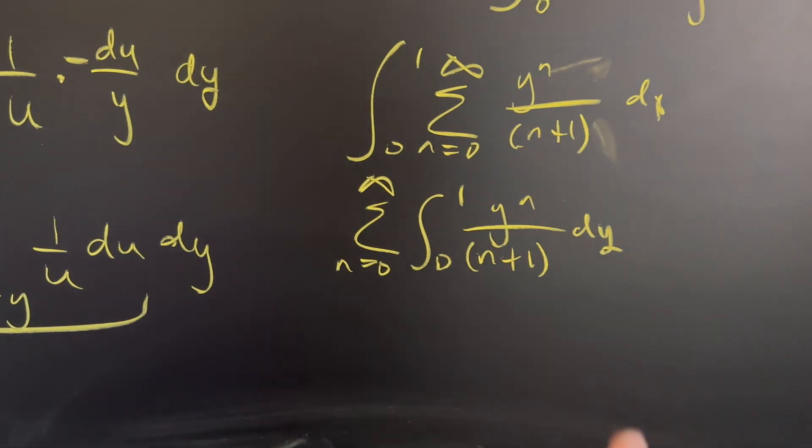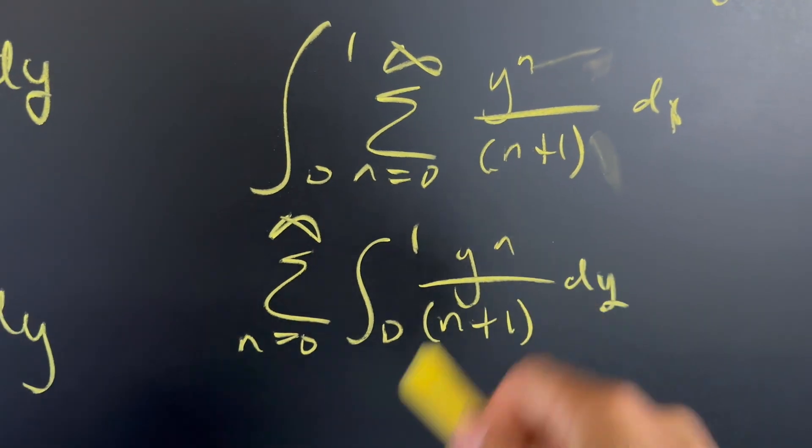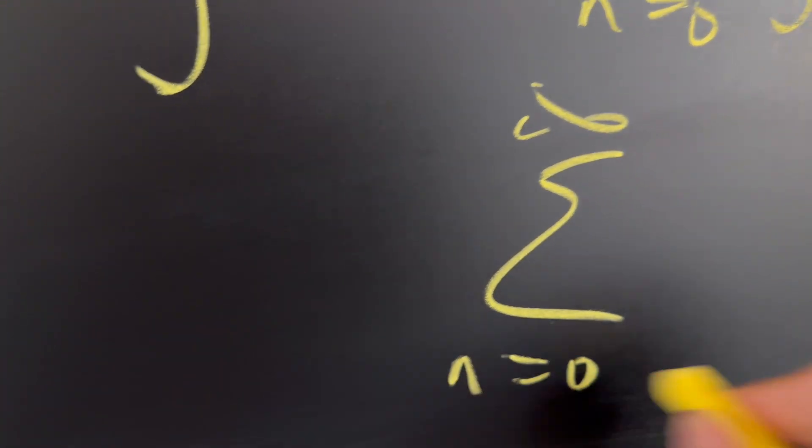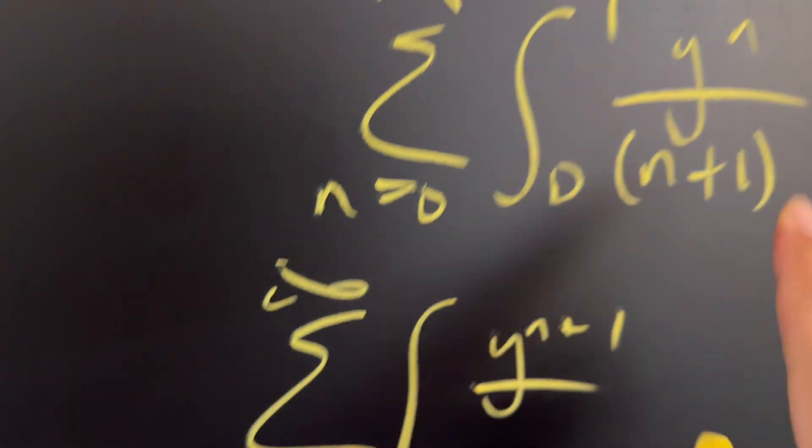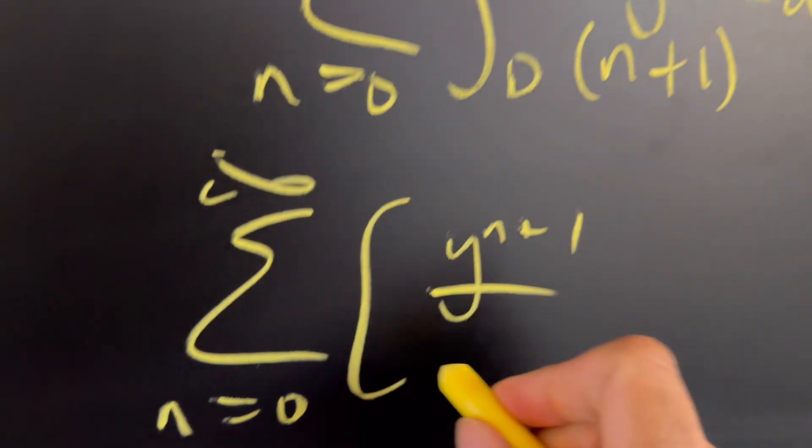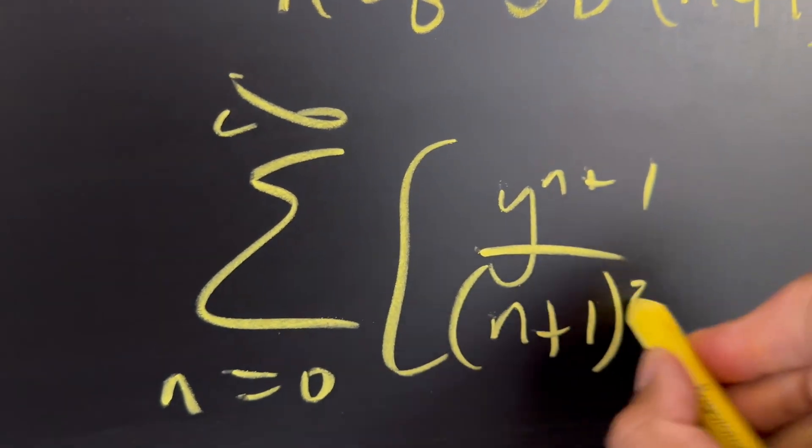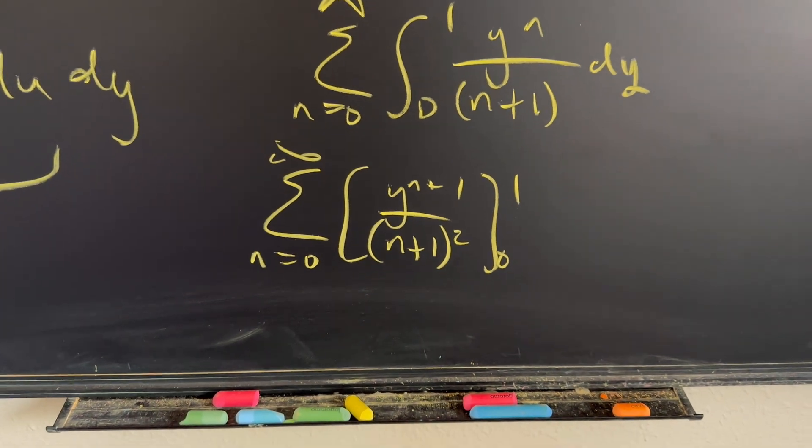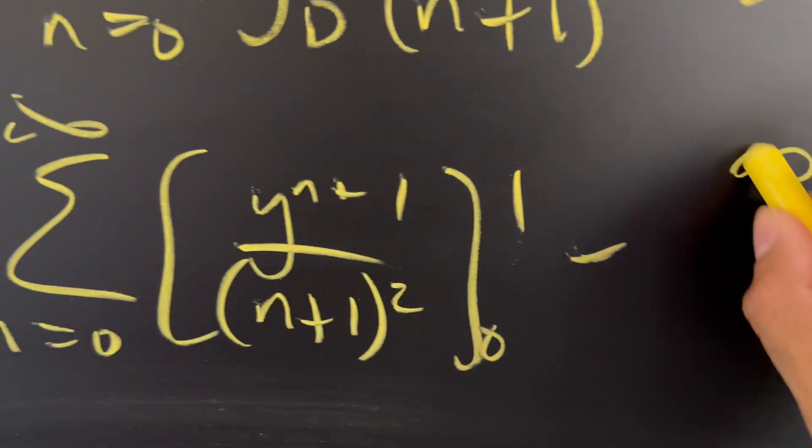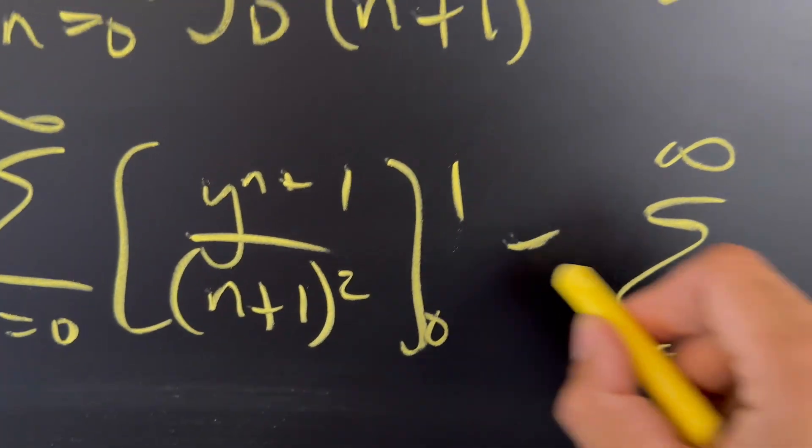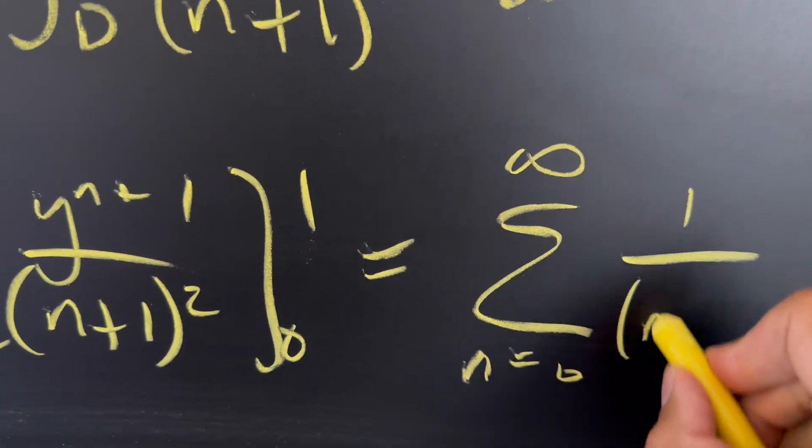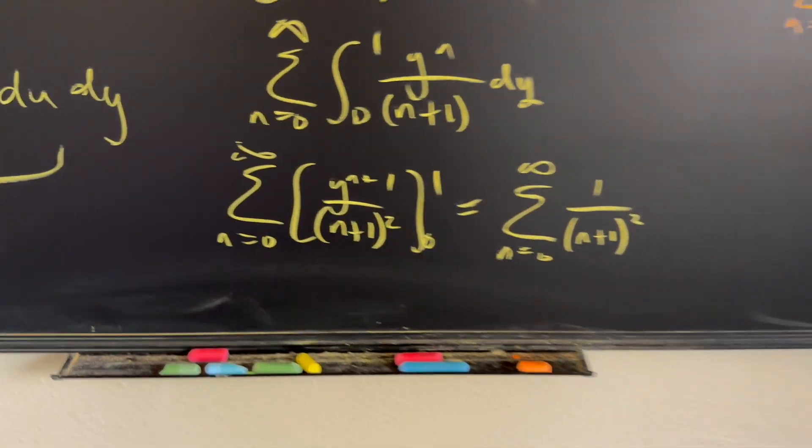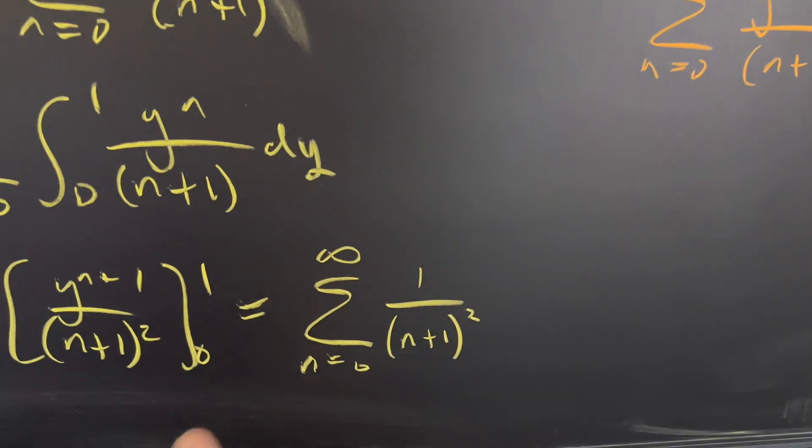Okay. Now we can go ahead and integrate this. Let's add one to the power divided by the new power. So we have the series from zero to infinity of y to the n plus one over, there's already an n plus one here. So now this becomes n plus one squared from zero to one. Well, we implement the first fundamental theorem of calculus. You plug in one here and you get the sum from zero to infinity of one over n plus one squared minus, and then you plug in zero and that goes away. So what we have right here is the Basel problem.